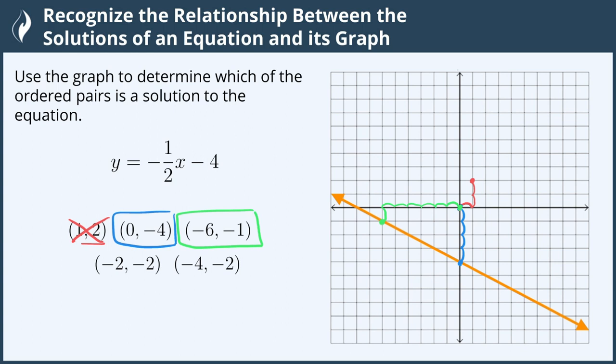Let's try the next ordered pair, (-2, -2). Starting at the origin, we move in the x direction negative two units, and then we move negative two units in the y direction, and our point is here, which is not on the line, so the ordered pair (-2, -2) is not a solution to our equation.